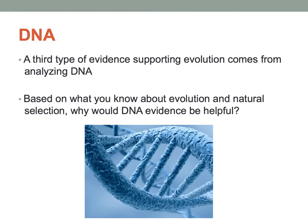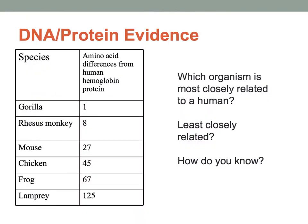DNA evidence is the third piece scientists use to support the idea of evolution. In a lab, we will compare the amino acid sequence for different organisms — the number of differences determines how closely related species are. For example, the difference in amino acid sequences in hemoglobin between humans and a gorilla is only one, but compared to a mouse, we have 27 differences. So we are more closely related to gorillas than to mice. The fewer the differences, the more closely related; the more differences, the less related.